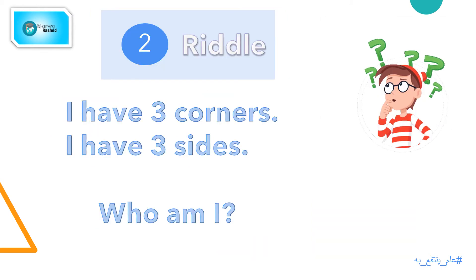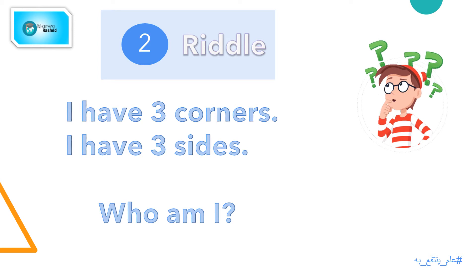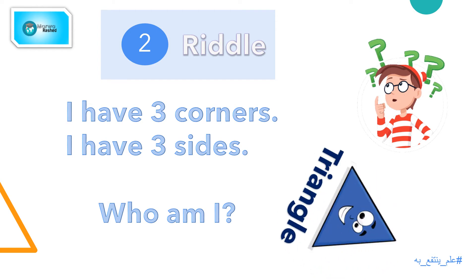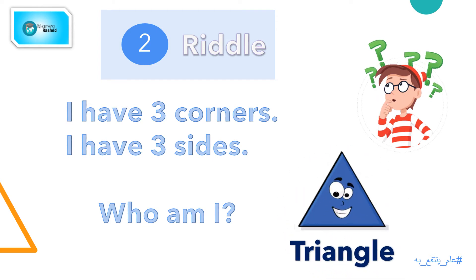Number 2. I have three corners. I have three sides. Who am I? Perfect! I am the triangle shape.